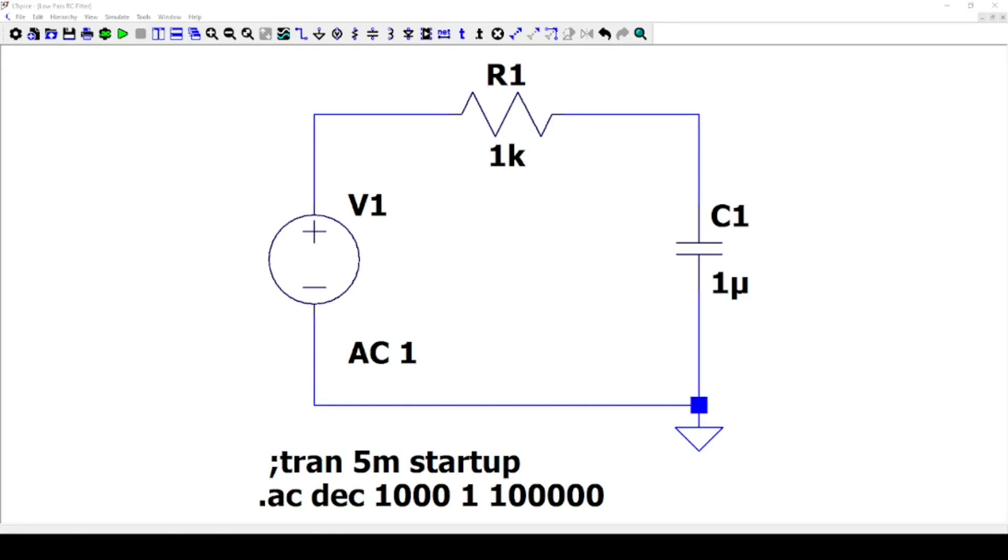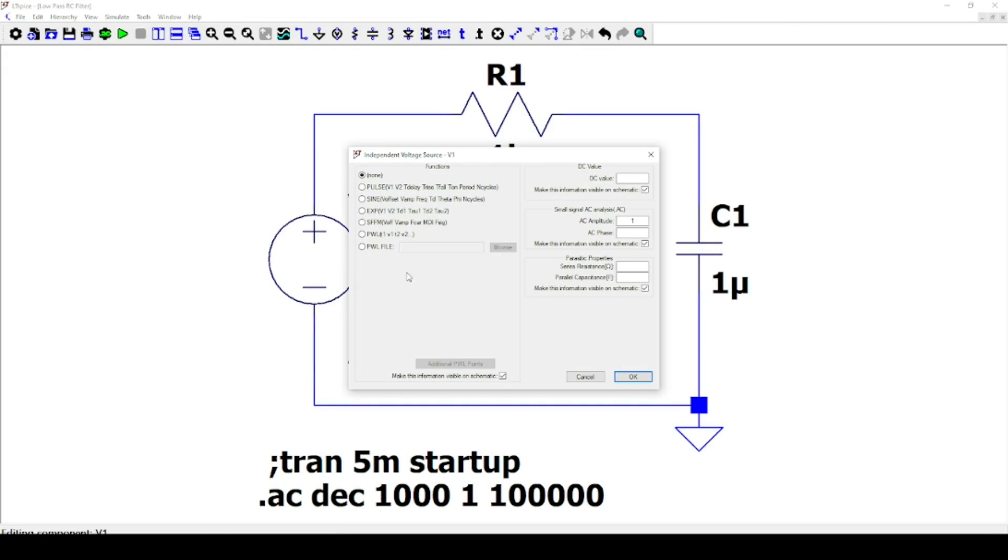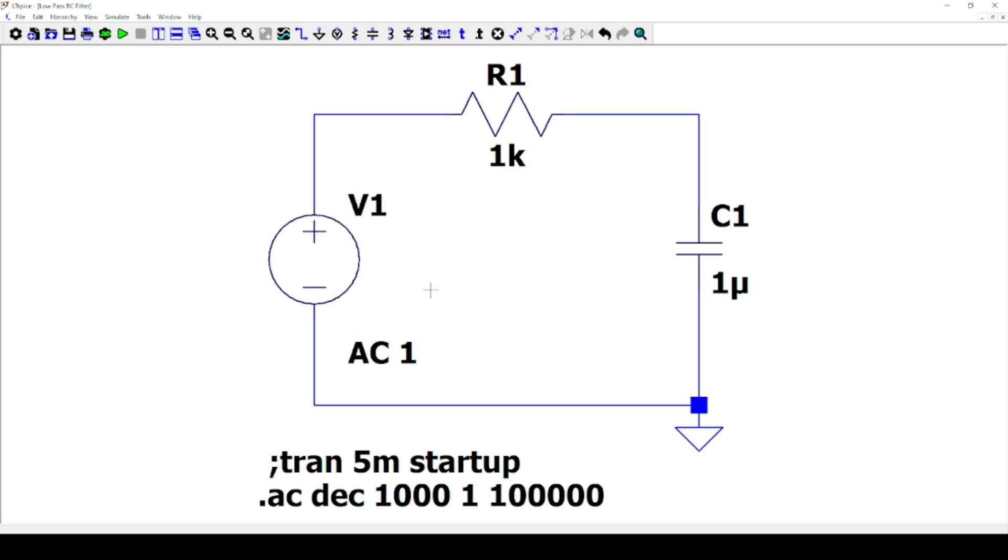Let's simulate this circuit on LTspice. After drawing the circuit, you will need to configure the supply voltage. In this case, we need alternating voltage. Right-click, and set 1 volt for example, and press OK.